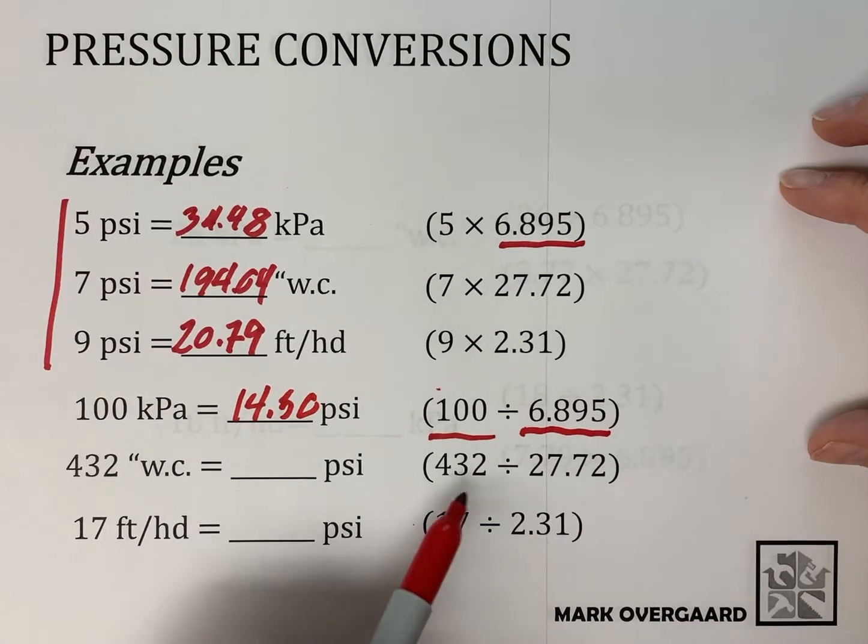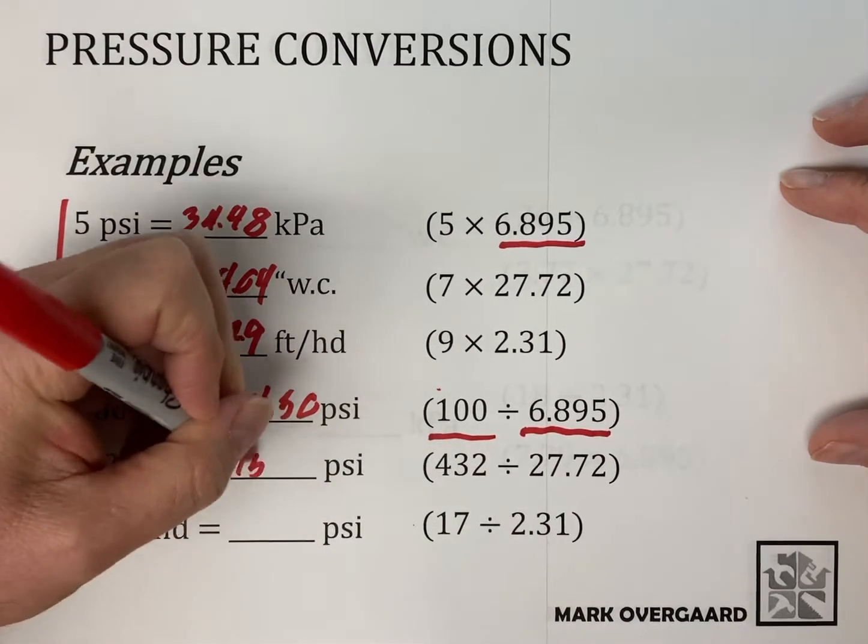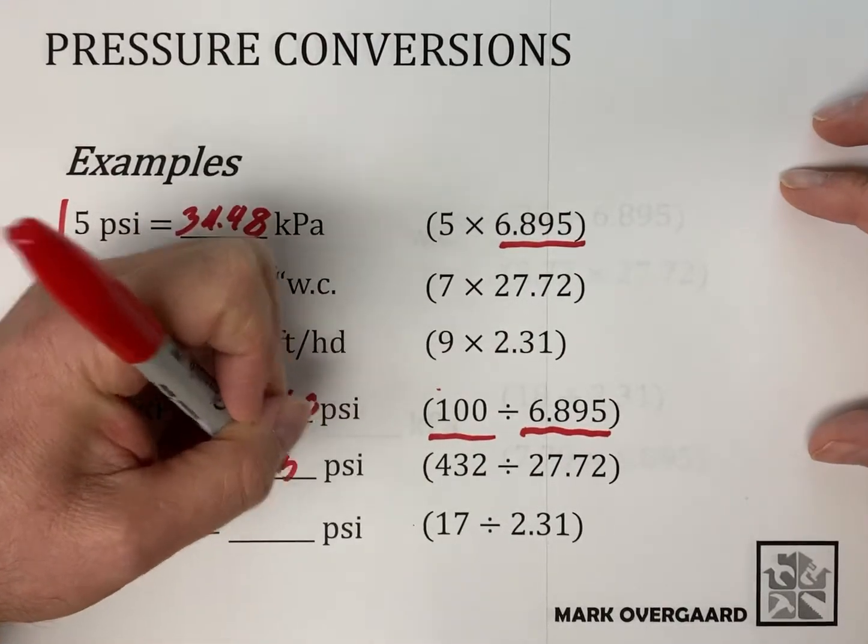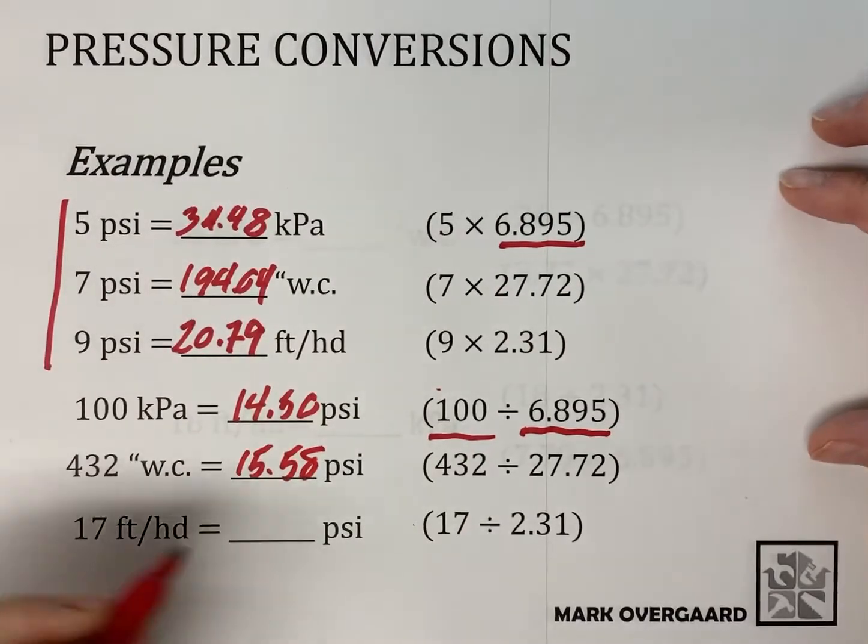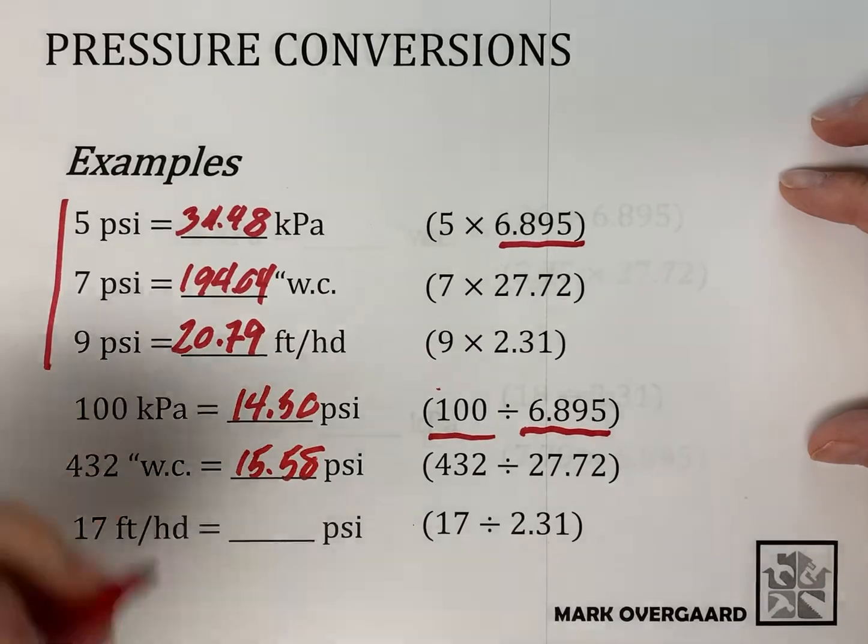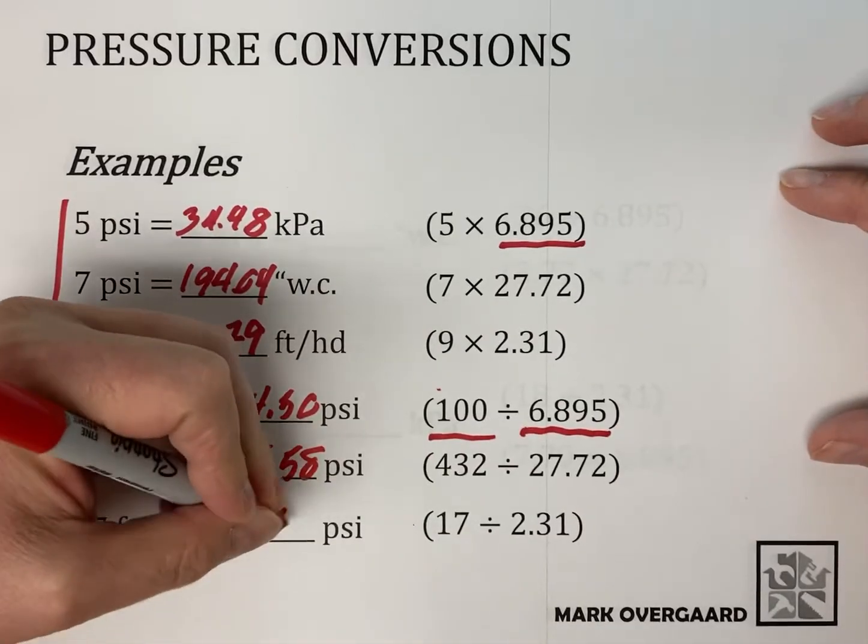Same with the water column. Divide it. You take the number of inches of water column, divide it by the number you need for one PSI, and you're going to get 15.58 PSI. Feet of head, same kind of concept. You end up with 7.36.